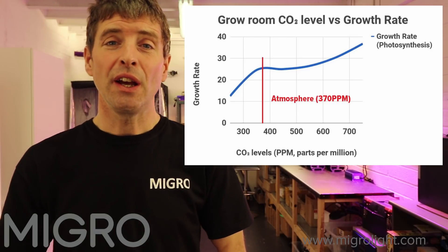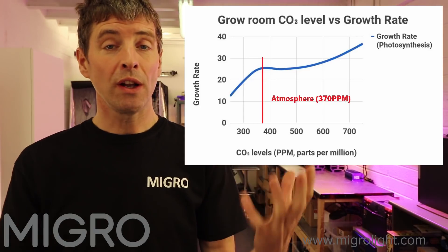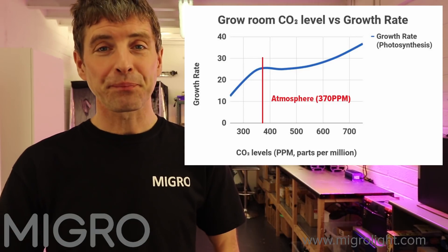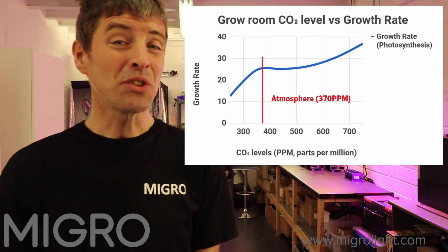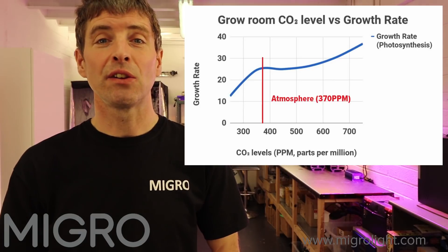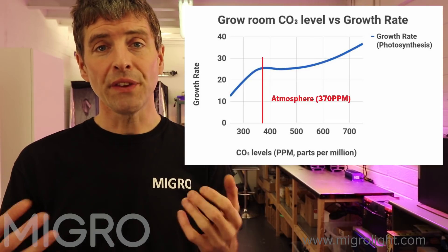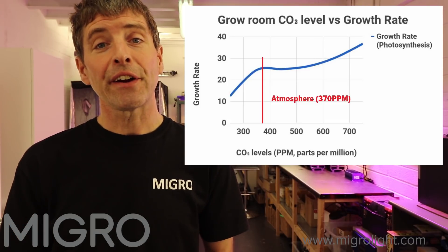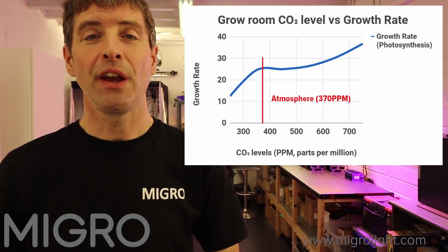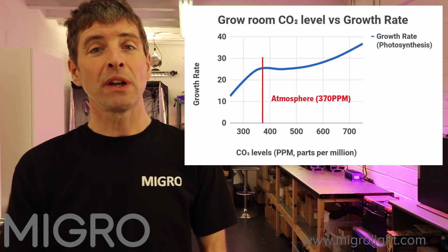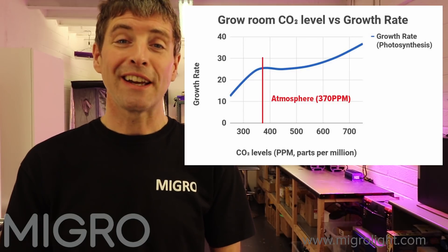Another method you could use is effectively natural and free sources. We all expel CO2 when we're breathing, and therefore in occupied buildings the CO2 level is often raised as much as twice the level from the external atmosphere. So if you can take air into your grow room from an occupied building — a house or workplace — you will most likely be bringing in elevated levels of CO2, which will increase the growth rate.